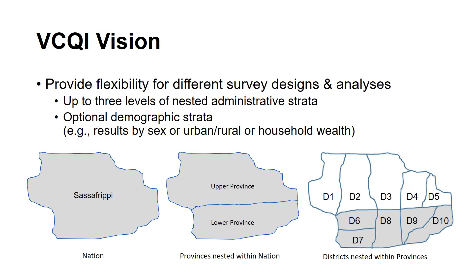The last aspect of the VIKI vision described today is flexibility. Some coverage surveys provide results for a single stratum — maybe a nation, province, or district — while others provide results for several strata or nested strata. For example, we might conduct a survey in the upper province and the lower province of a nation named Sassafrippi, and want to calculate results for each province as well as for the nation combined.